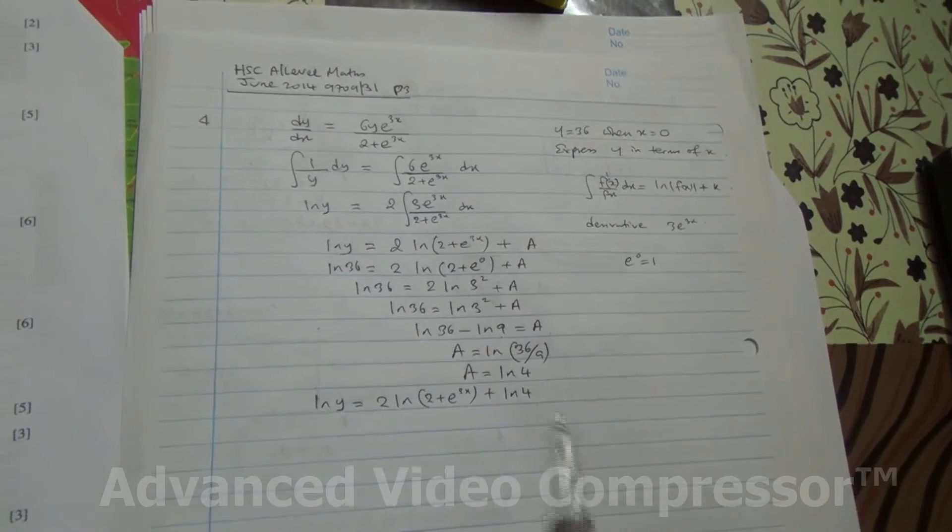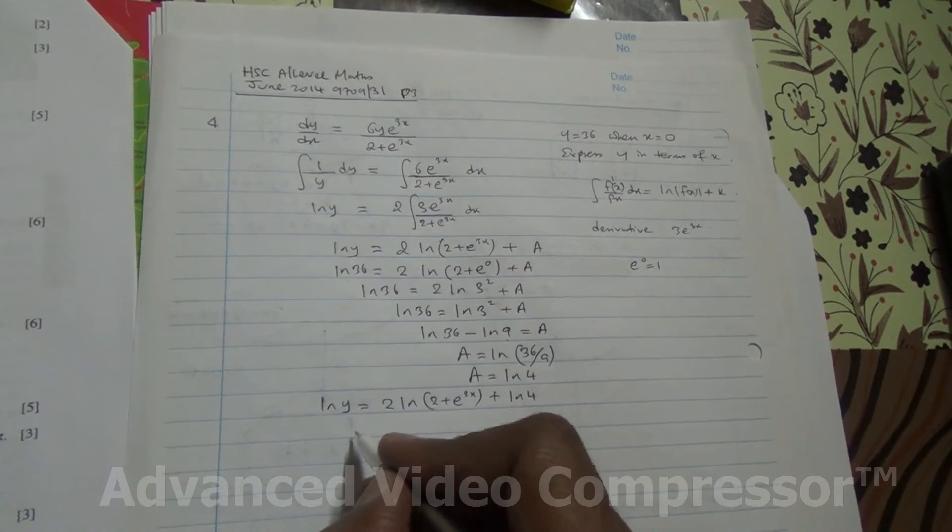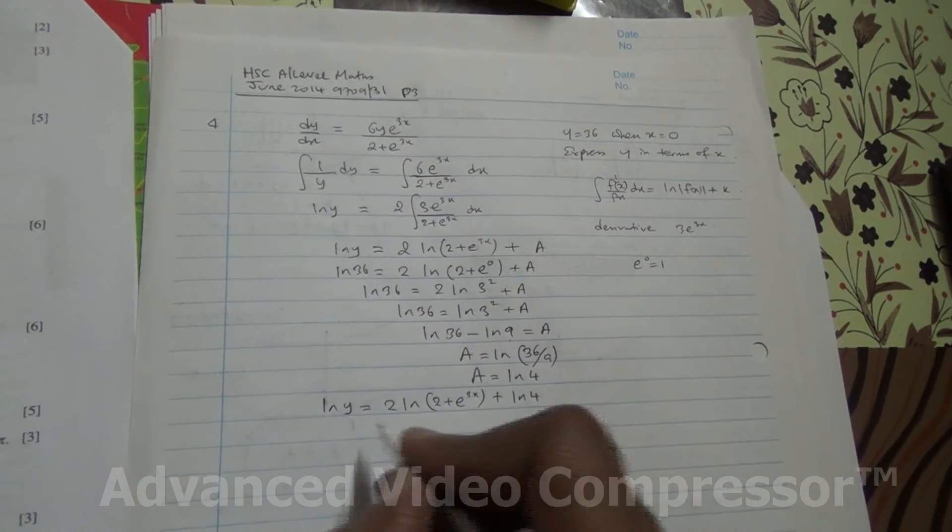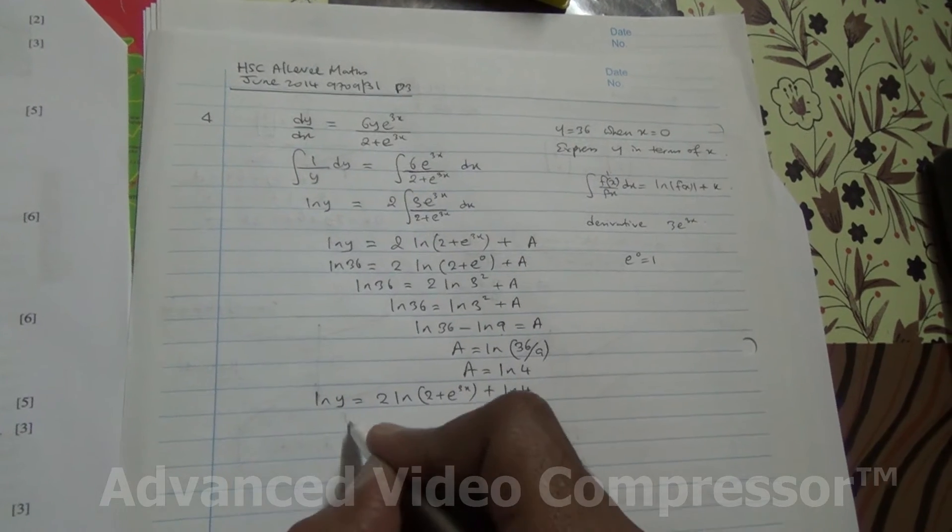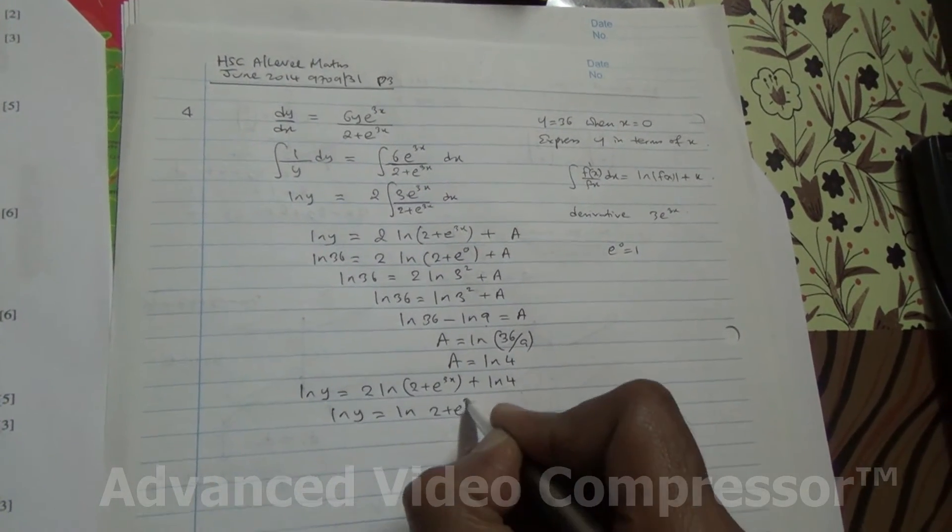Alright, so we need to express y in terms of x. So to do this, ln y is equal to ln 2 plus e to the 3x.